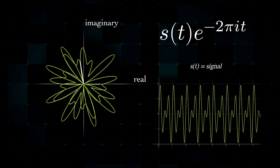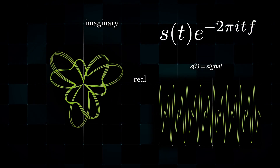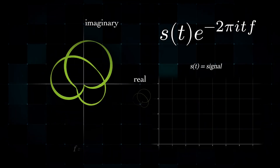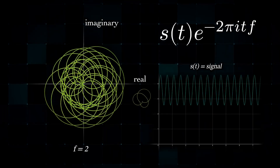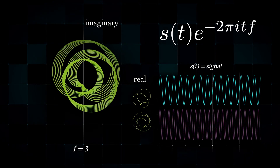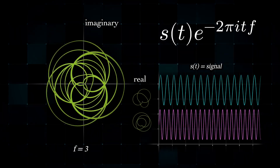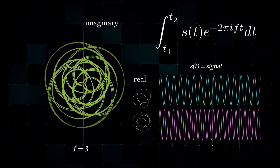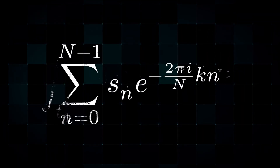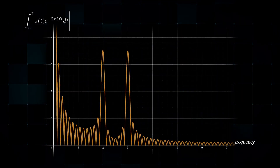Now, we don't care about time, we care about frequency — the tightness of the twist. As we increase the frequency, notice that for some values, 2 and 3, our graph aligns especially nicely. Mathematically, that's when the sum of all the points, or the integral, is not close to zero. In reality, signals are a bit messier, but the idea is the same. This is our Fourier transform.